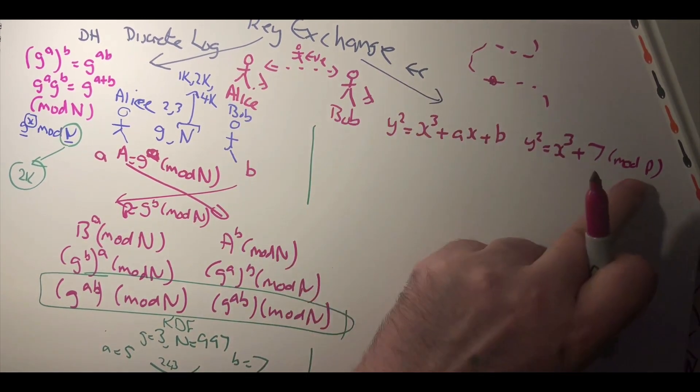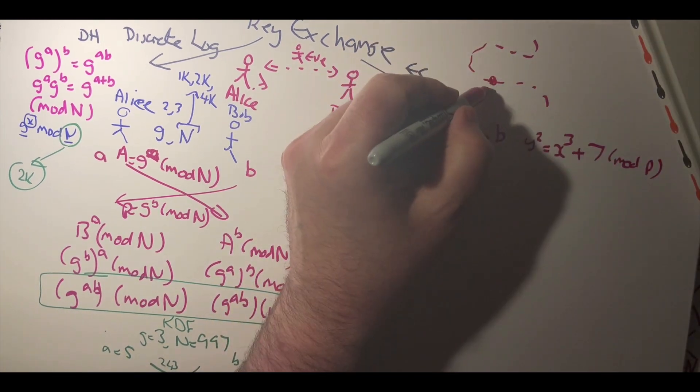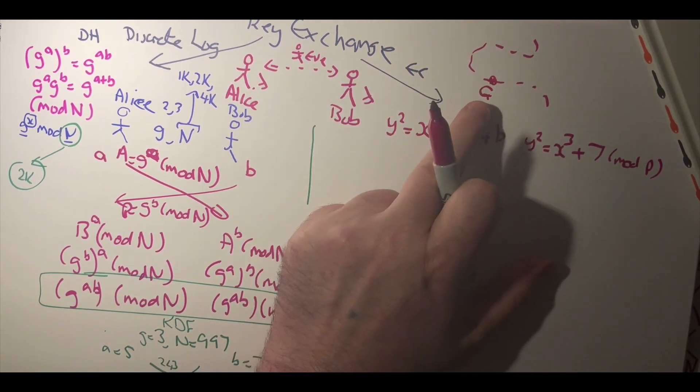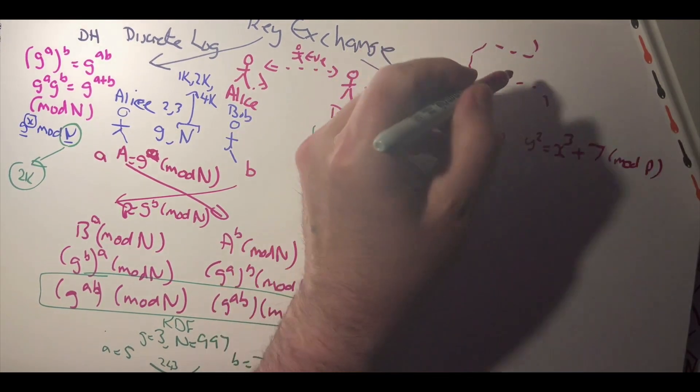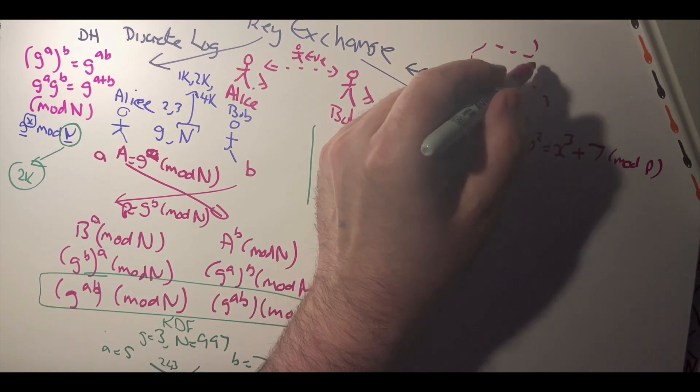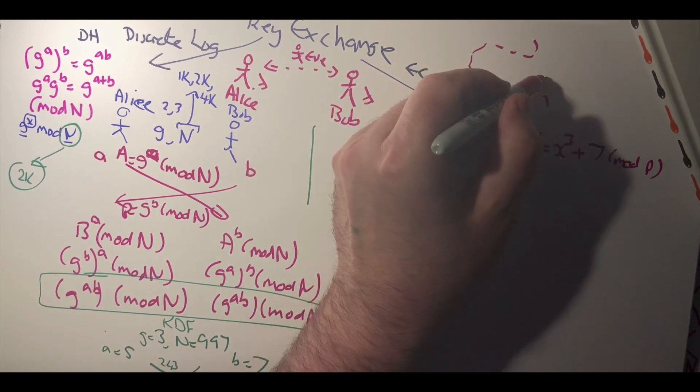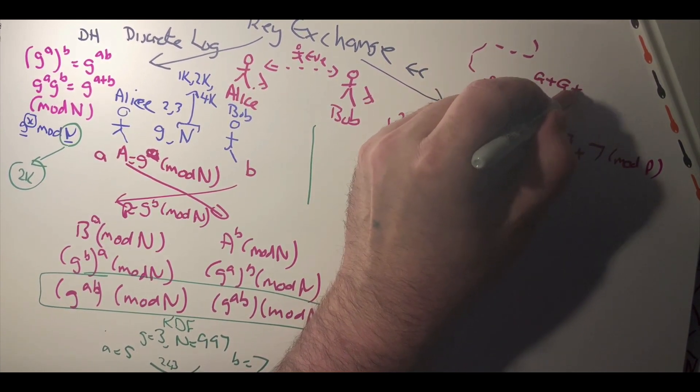For this we create a discrete one with this mod p operation, and then we end up with what's called the generator point or g. What we do then is to add g many times.